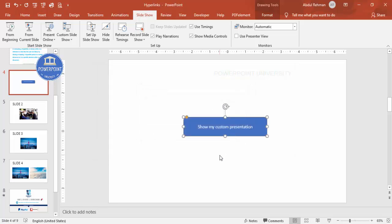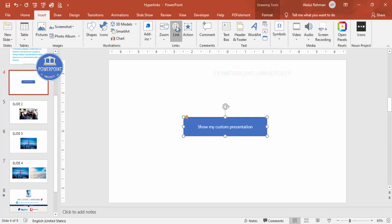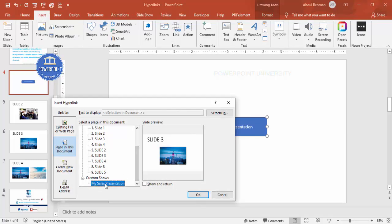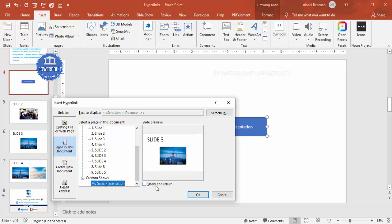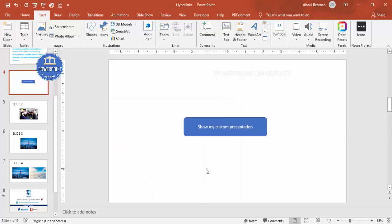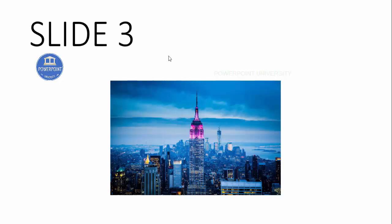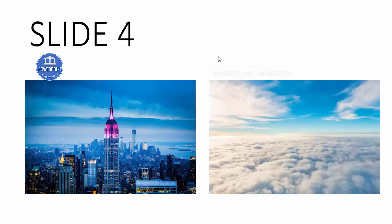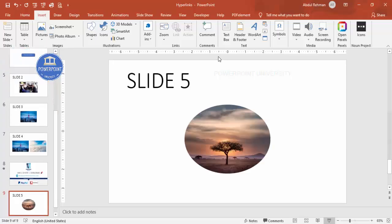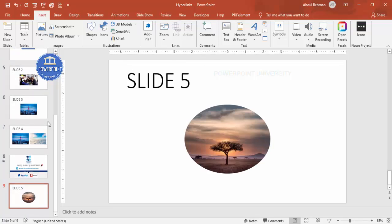Click OK and close the Custom Shows dialog. Now select the shape again, go to Insert > Link, and you can see 'My Sales Presentation' is now listed under Custom Shows. Notice that 'Show and Return' is disabled for regular slide links, but when you select a custom show it becomes enabled. Click OK, then run the slideshow. When you bring your cursor over the button, it changes to a hand icon, and clicking it shows slide three, then two, then four, then five.